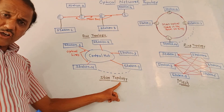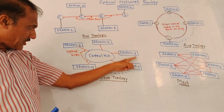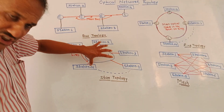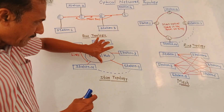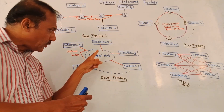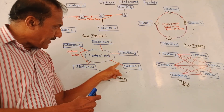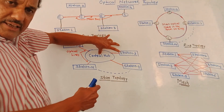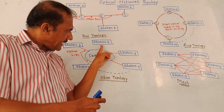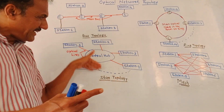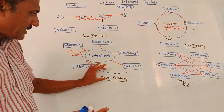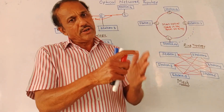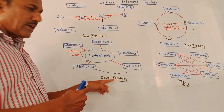The third type of topology is star topology. Different stations — station 1, 2, 3, 4, up to station N — are each connected to a central hub using a separate optical link. The drawback of the earlier two topologies does not apply here: if any single link fails, the entire system does not fail because the remaining links remain in working condition. Another major advantage is that any station or node can be easily added or removed using star topology.